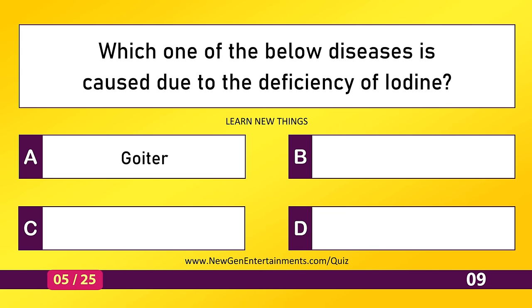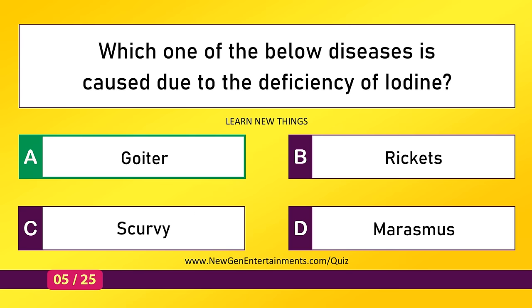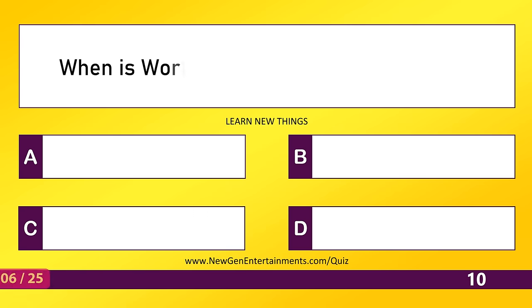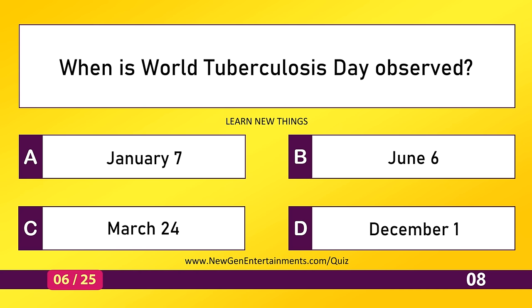Which one of the below diseases is caused due to the deficiency of iodine? Goiter. When is World Tuberculosis Day observed? March 24th.